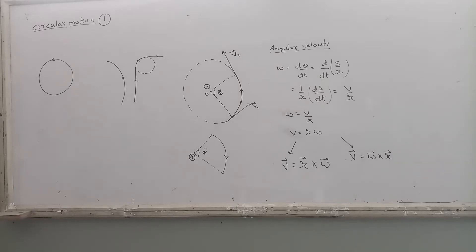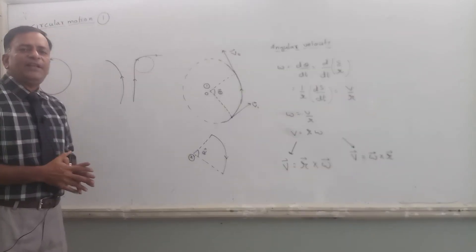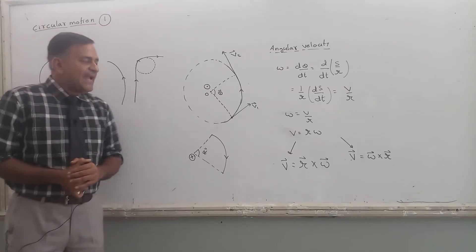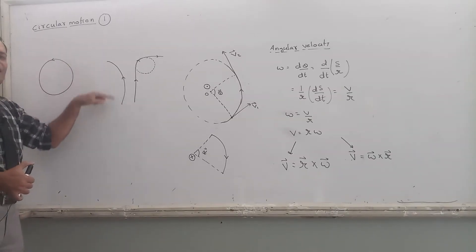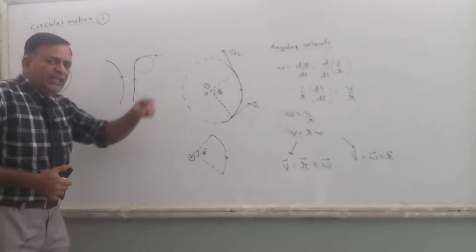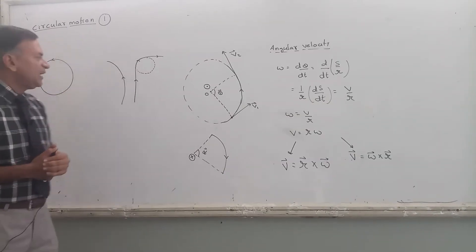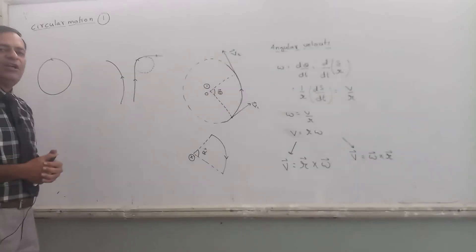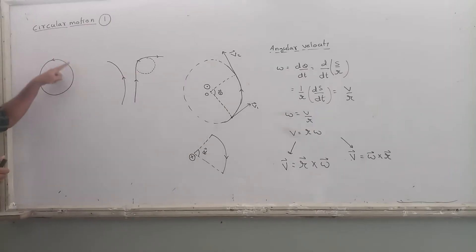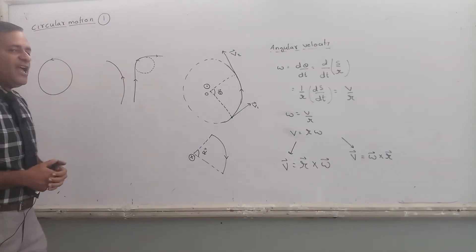In this video we will discuss circular motion. When a body moves in a circular path or a part of a circular path, the body is said to be in circular motion. If a body covers a complete circle, it is in circular motion. Even if it covers only an arc of the circle, it is still in circular motion.